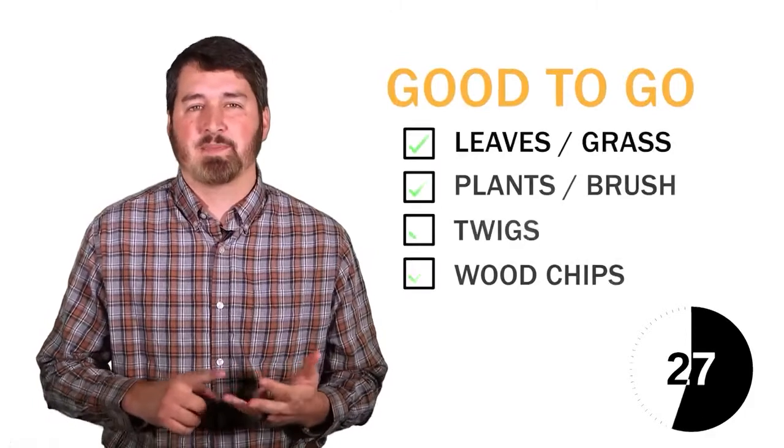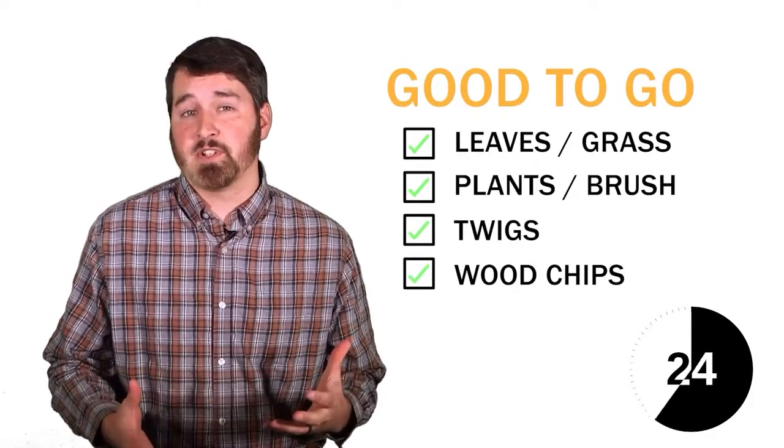Some of the better things to toss into your compost bin are leaves, grass, plants, small brush, twigs, and even sawdust or wood chips.